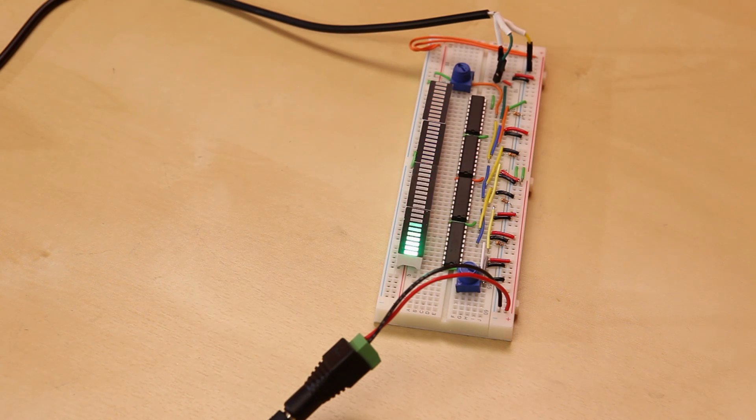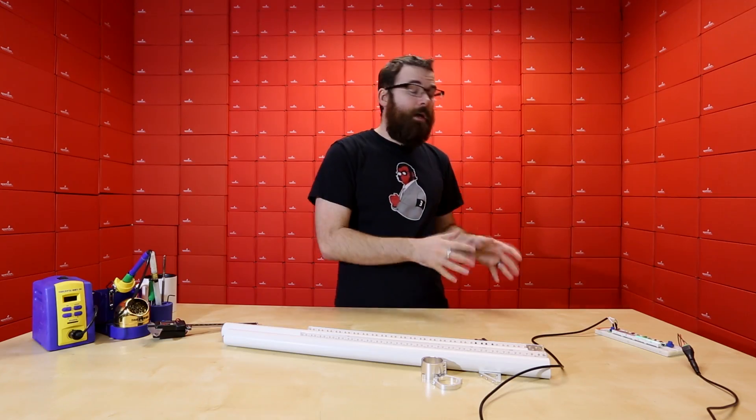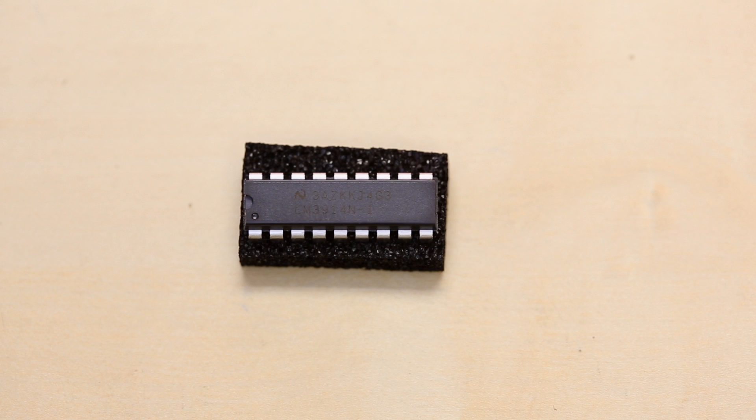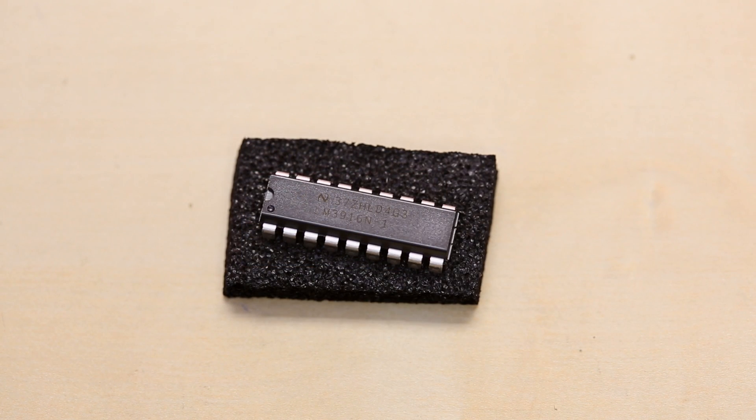These are pretty interesting. I definitely encourage you to check out the whole quick start guide to kind of wrap your head around how they work in different applications. But if you have an analog output and you want a nice simple visual display for it, check out the LM3914 or the LM3916.